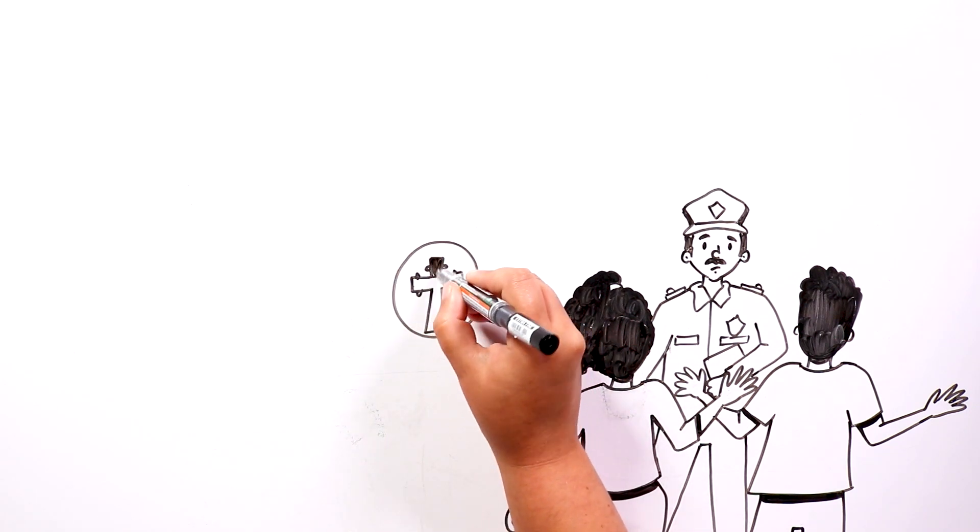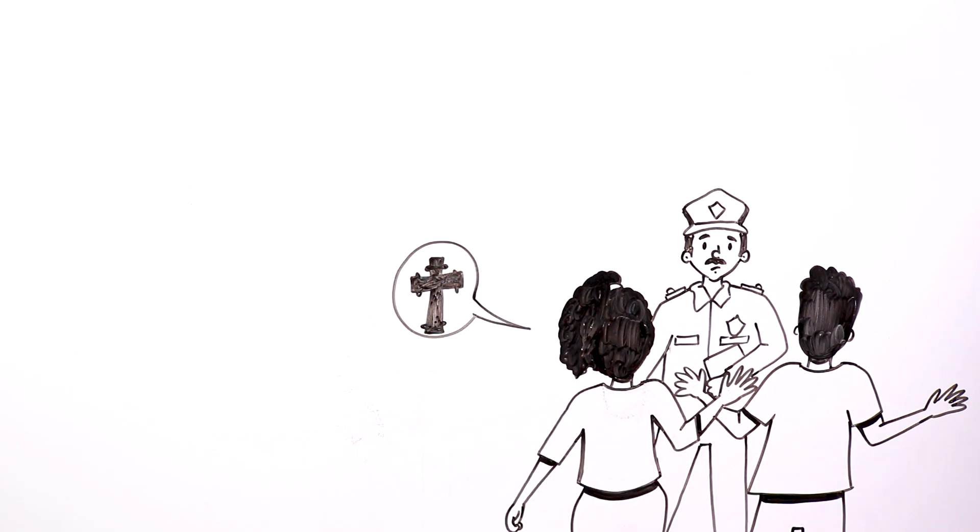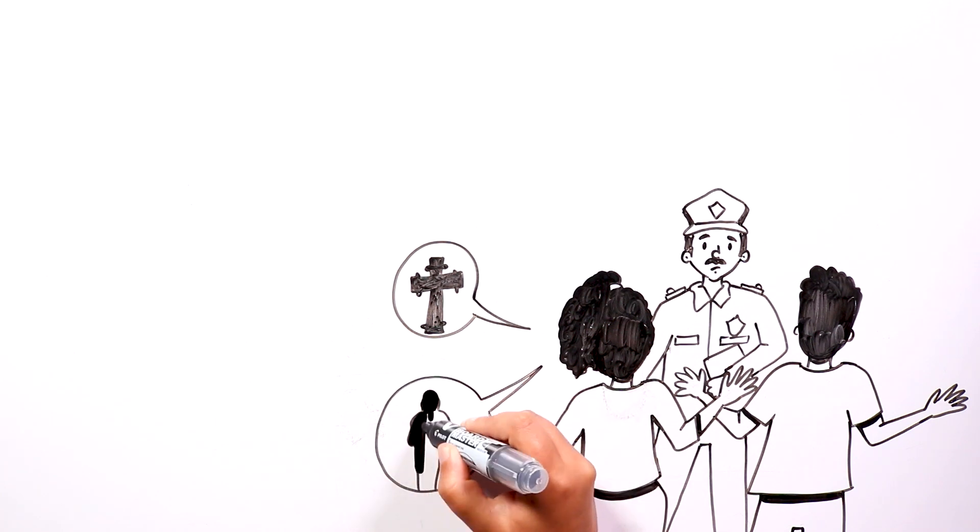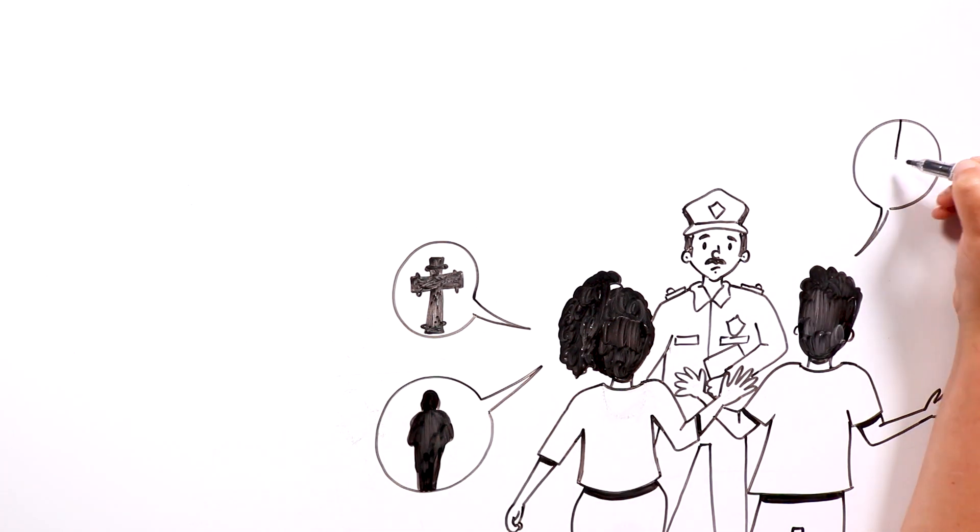The family explained that the crucifixes they had were moving on their own, and that a towering figure observed them from the hall. Then, the father asked to turn off the lights, because the strange events took place when everything was dark and quiet.